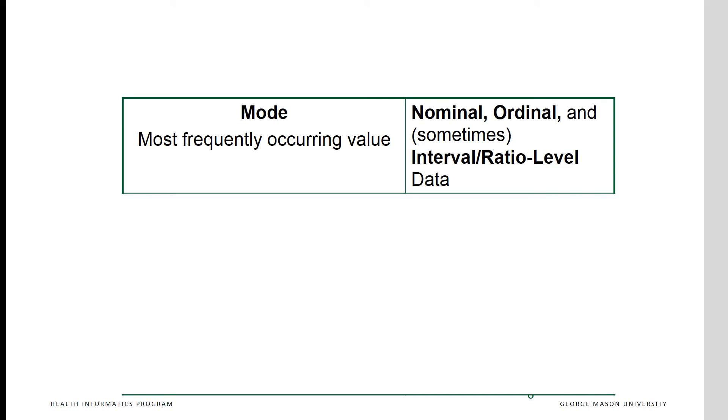One of the common ways of describing data is to describe the central tendency of the data. We want to answer the question: around what value does the data tend to cluster? Which statistic we use depends on the level of the data. With nominal level data, the only appropriate measure of central tendency is the mode, or the most frequently occurring value. The mode may also be used with ordinal level data and sometimes with interval level data.